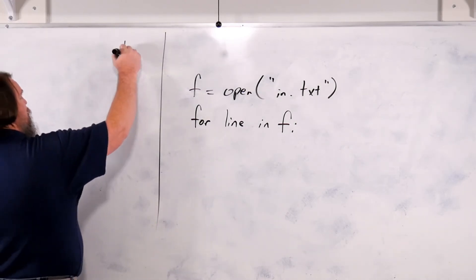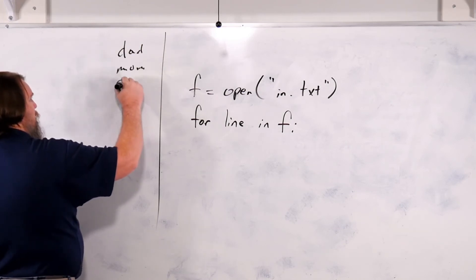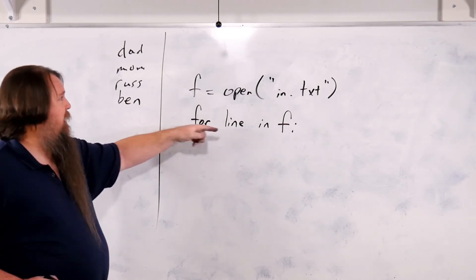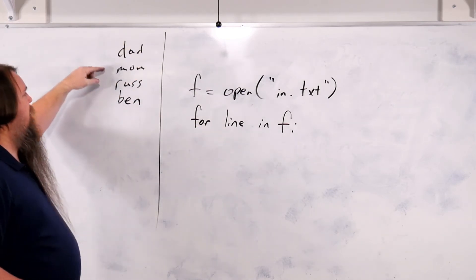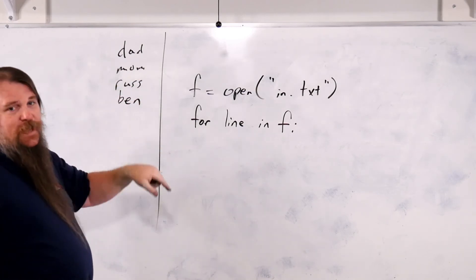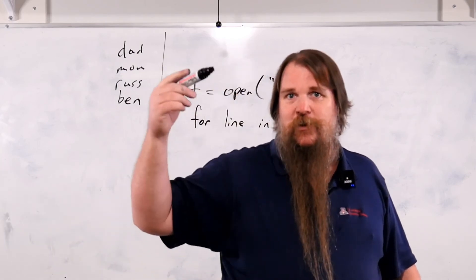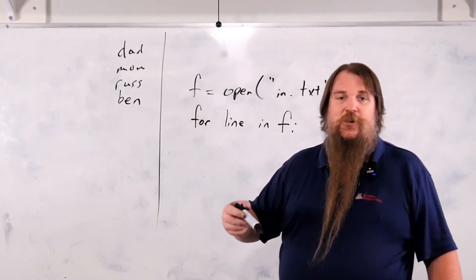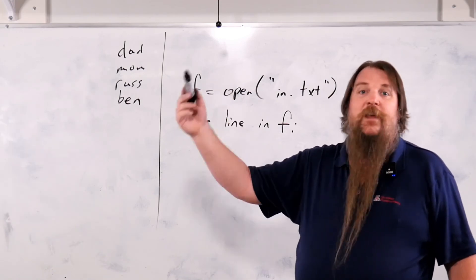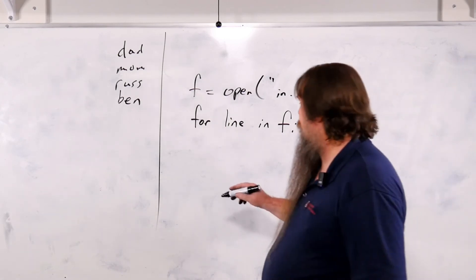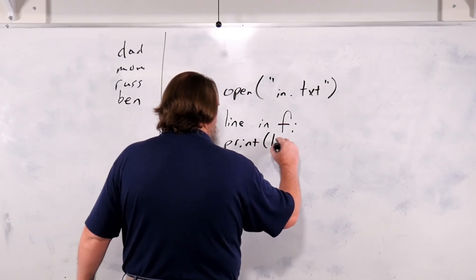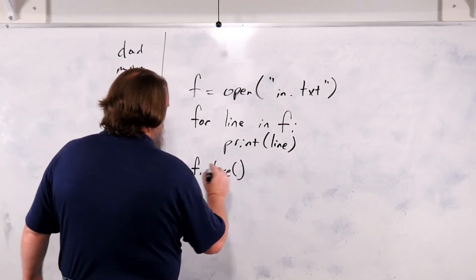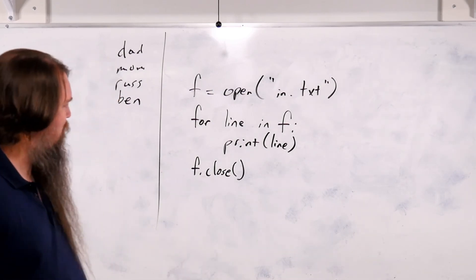So if we have that example file with dad, mom, Russ, Ben — on the first iteration, line will be 'dad\n', then 'mom\n', then 'Russ\n', then 'Ben\n'. This is the equivalent of calling readline over and over until you hit the end of the file. We could print the line or process it however we want, and remember to close the file object when done.